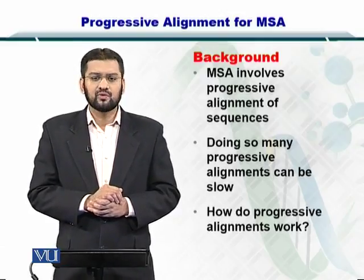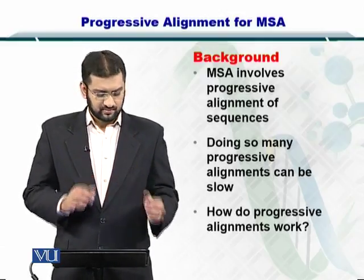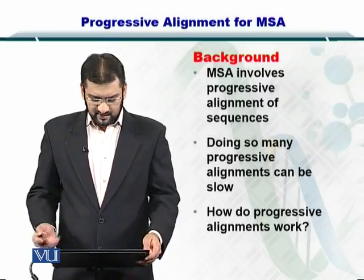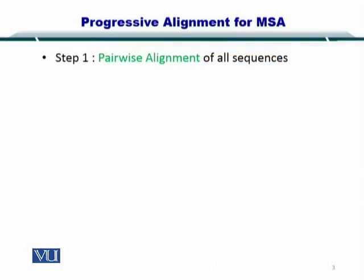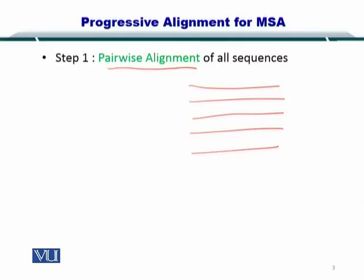So the important thing is to understand how progressive alignment works. As a first step in progressive alignment for MSA, you perform pairwise alignments on all sequences. That is, you take these sequences and you align sequence 1 with all other sequences.